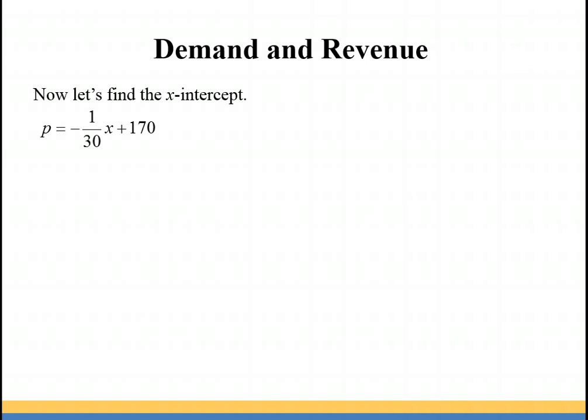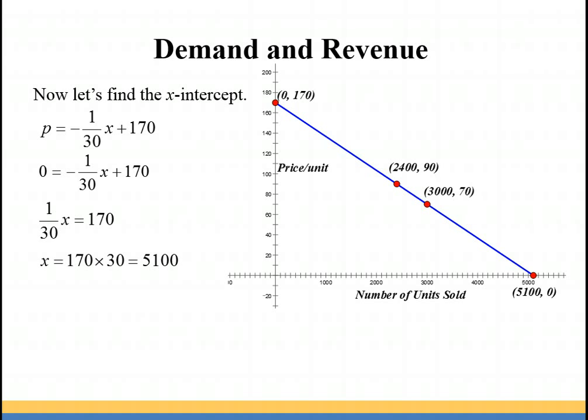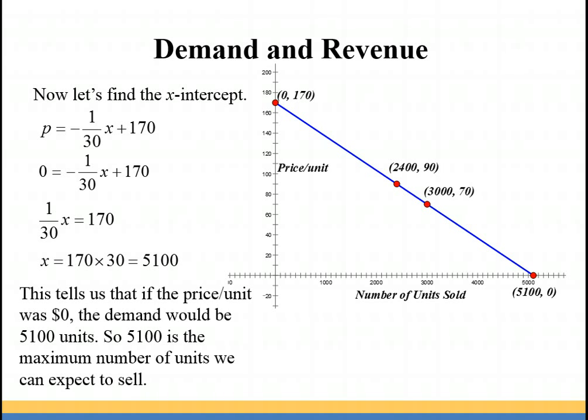Let's find the x-intercept. Remember you're going to find an x-intercept when your output value is zero. So we're going to replace p with zero and isolate x. We have 1/30x equals 170, and multiply both sides by 30. So you get x is 5100 units. That tells us that if the price per unit was zero, the demand would be 5100 units. So 5100 units is the maximum number of units that we can expect to sell.